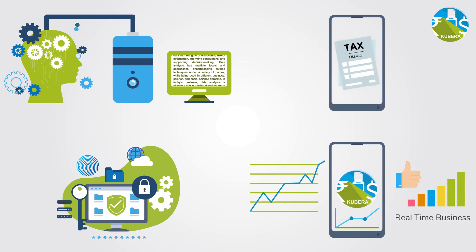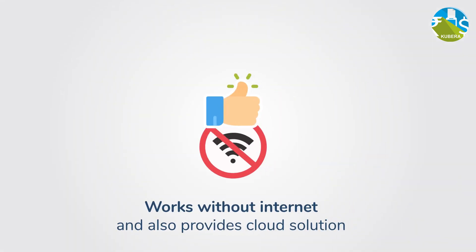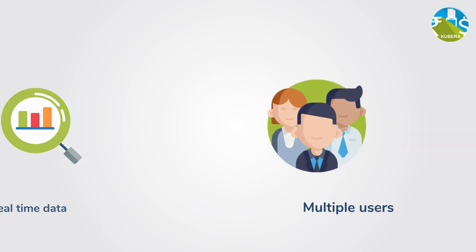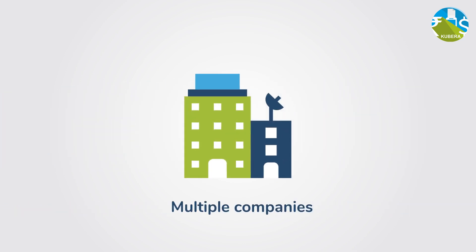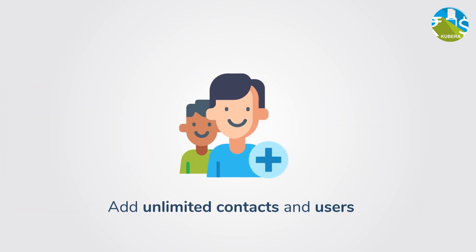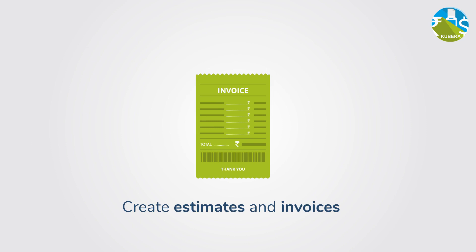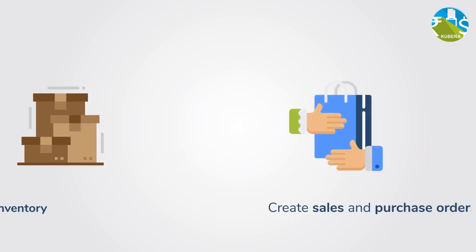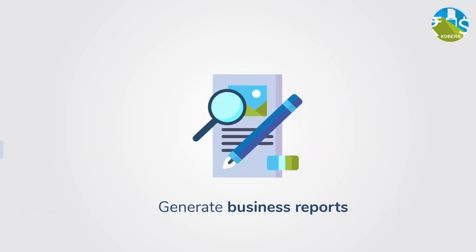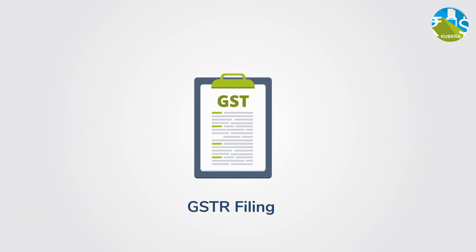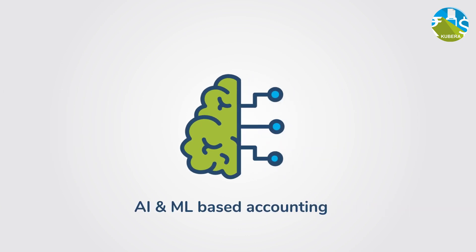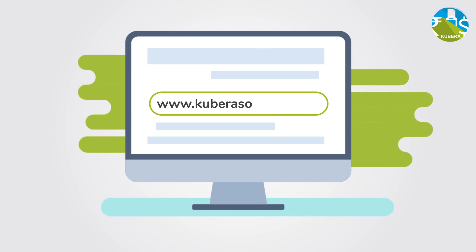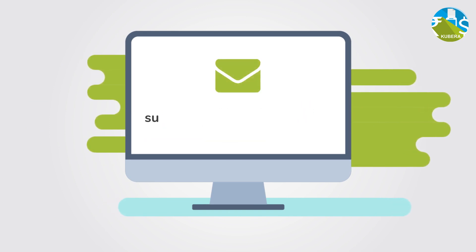Kubera's main features include: works without internet connection, business-specific analysis on real-time data, multiple users, multiple companies, unlimited users, create estimates and invoices, track bills and expenses, monitor inventory, create sales and purchase orders, generate business reports, GSTR filing, and artificial intelligence and machine learning. Please visit www.kuberasoftech.com for further details.